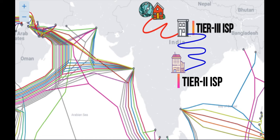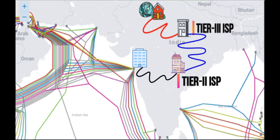Tier 2 ISP acts as a mediator between tier 1 ISP and tier 3 ISP — they take service from tier 1 and provide service to tier 3 ISP. Tier 2 ISP handles a very important role because they cover most of the big geolocations.